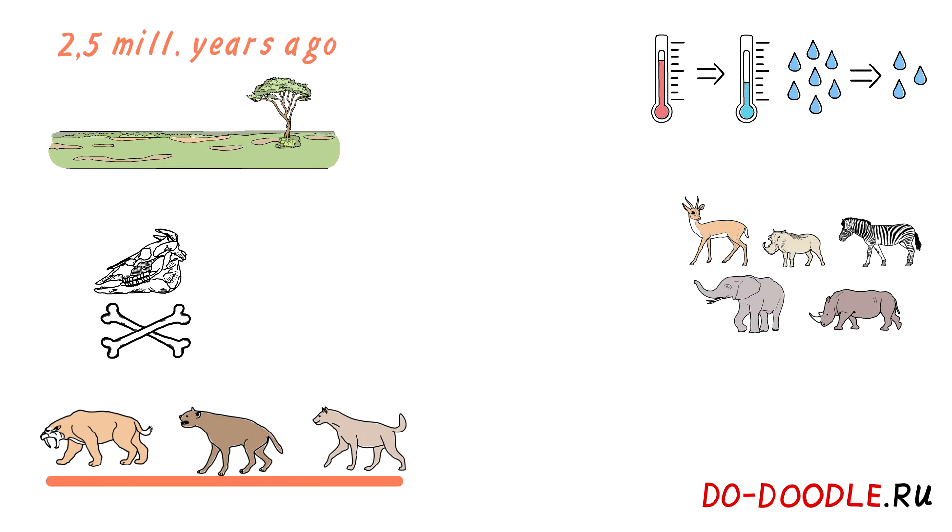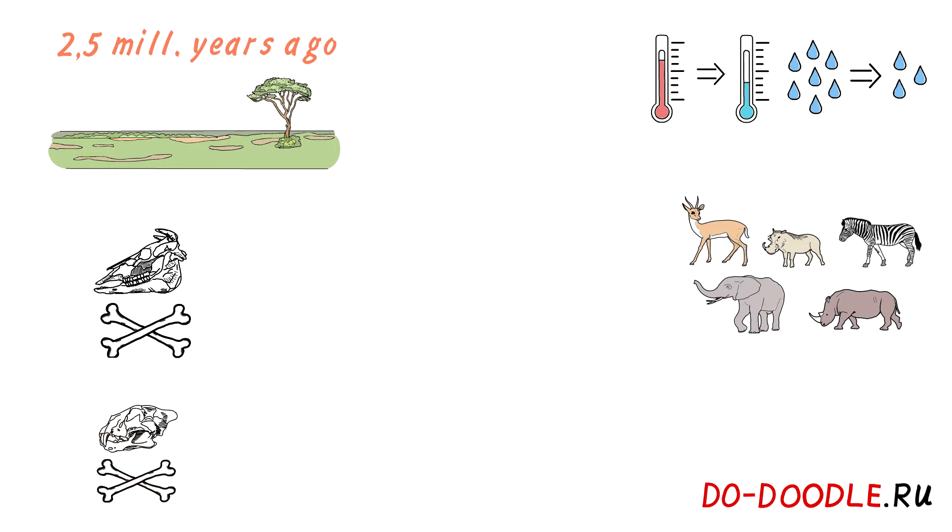Large predators had to follow their ungulate contemporaries. Giant hyenas and saber-toothed tigers in Africa went extinct. Their place was taken by modern leopards, lions, cheetahs, spotted hyenas, jackals and African wild dogs.